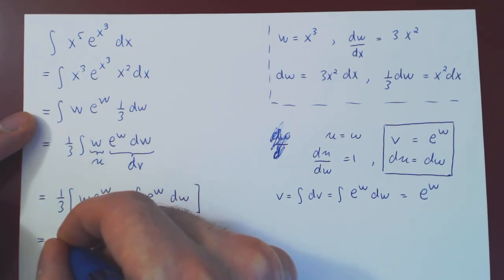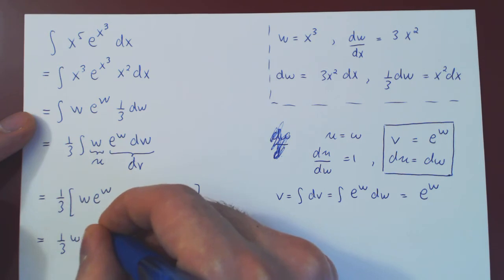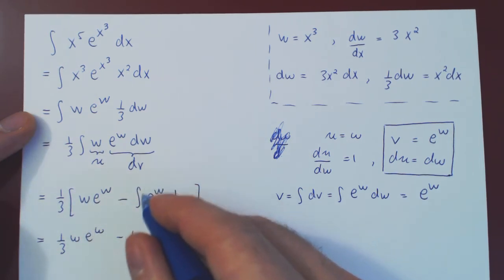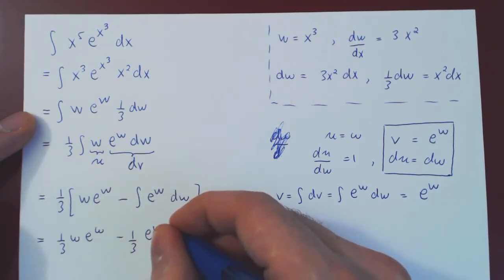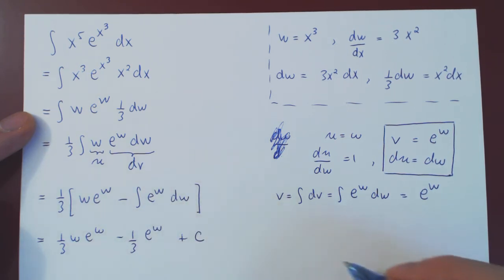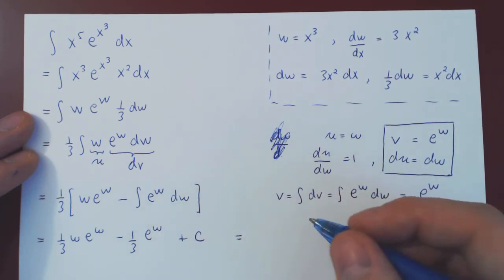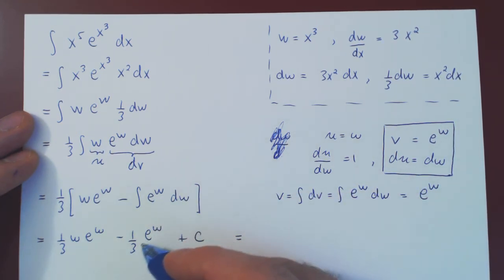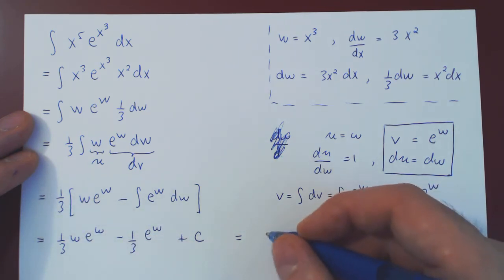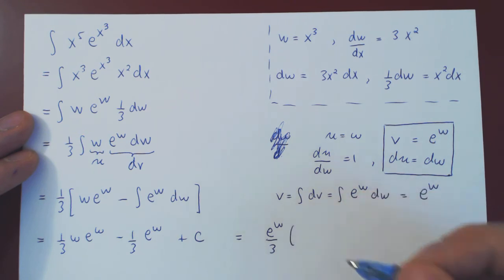So, I'll distribute my one-third also. So, I'll have one-third w e to the w, minus one-third. This integrates to itself, e to the w, plus, of course, the arbitrary constant of integration. Well, we can factor common terms, and e to the w over 3 can be factored from both terms.